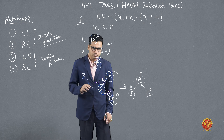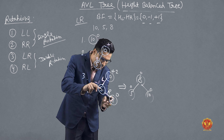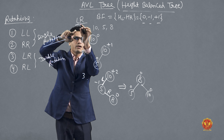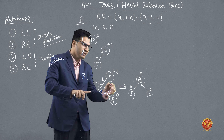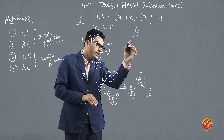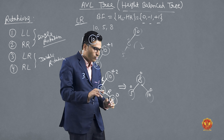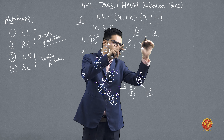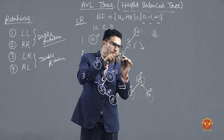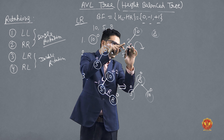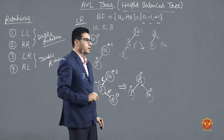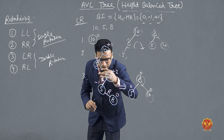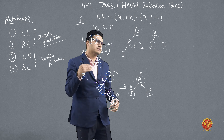Now why is this called a double rotation? To balance this tree, we first rotate 8 to the left side, then rotate to the right side — that is why it is called Left-Right (LR) rotation. So first one rotation happens to the left, which is the LL rotation part, and then the second rotation is to the right, which is the RR rotation part. LR and RL are both double rotations — first rotate left, then rotate right. This is the LR rotation.